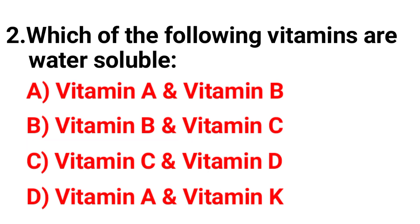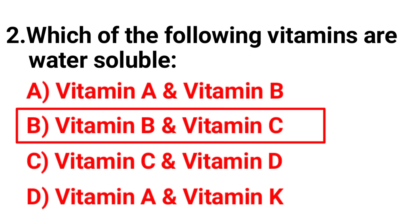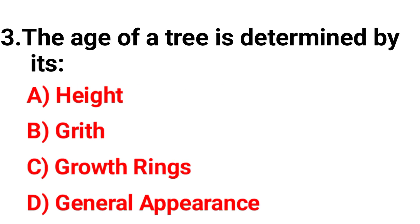Question two: Which of the following vitamins are water soluble? Option A: vitamin A and vitamin B, option B: vitamin B and C, option C: vitamin C and D, option D: vitamin A and K. Your right answer is option B, vitamin B and vitamin C.